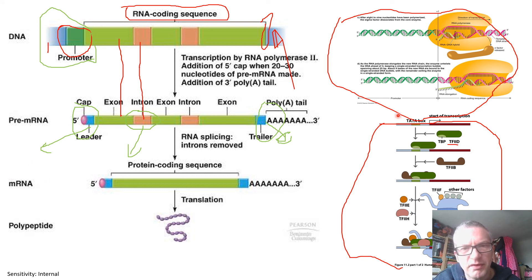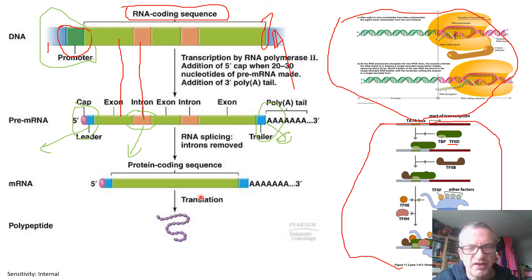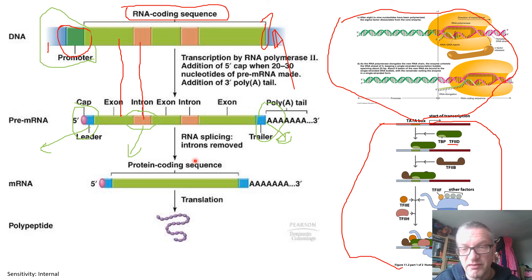Once the introns have been removed by splicing, and we've got caps and tails, this is called messenger RNA — or sometimes mature messenger RNA. Now it's ready to undergo the translation process, and in the case of eukaryotes that means leaving the nucleus and heading to the ribosomes. In prokaryotes it's different — the two processes are effectively coupled or joined together.